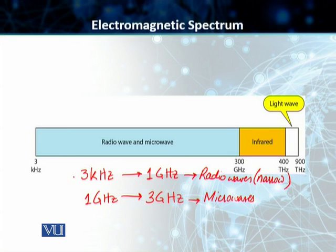When we subdivide this into subbands, the bandwidth for those subbands is narrow as well. Because of that, these narrow bands can only carry a very low data rate for digital communication. So radio waves are okay, but they are not the best choice for digital communication.